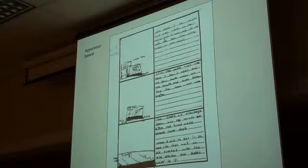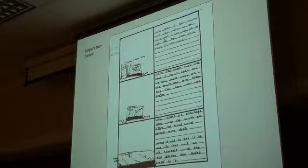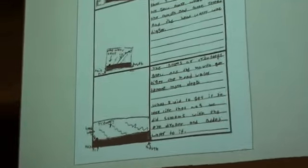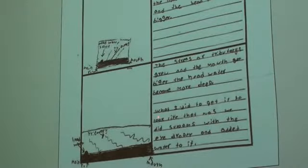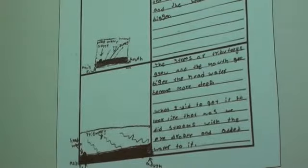Here we have another apparatus-based one — a pictograph symbol cluster. What this student does is widen the context from the apparatus itself, which is incredibly detailed, to a broader and broader context — to the point where the representation of the watershed itself is much more of a symbol mapping, less literal. He's got the essential elements here and has used some key vocabulary to label these. What he's done in the verbal language again is to write down what he did: 'What I did to get it to look like that was we did streams with the eyedropper and added water to it.' Again, that's what he did — that's not the science concept.